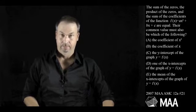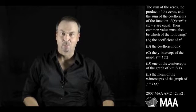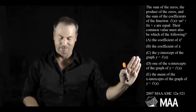The sum of the zeros and the product of the zeros and the sum of the coefficients of the function f of x equals ax squared plus bx plus c are equal.